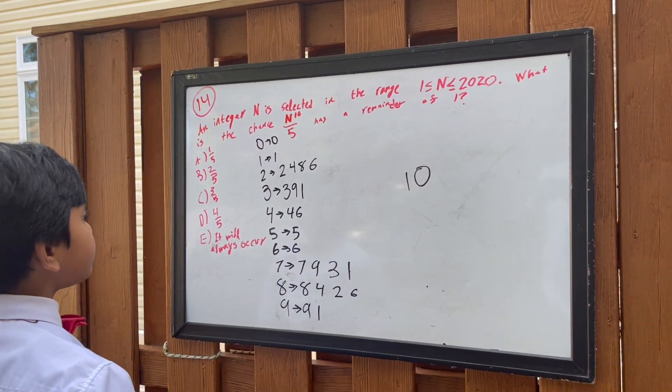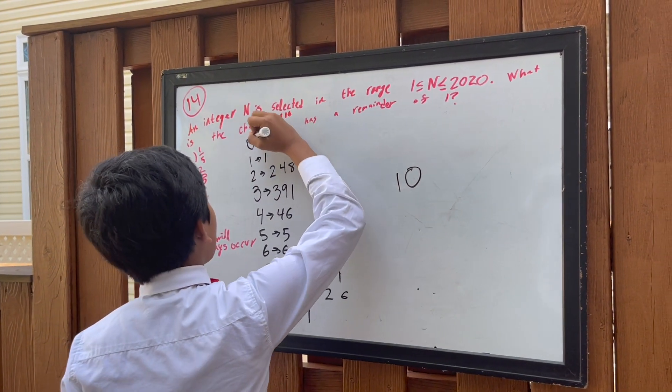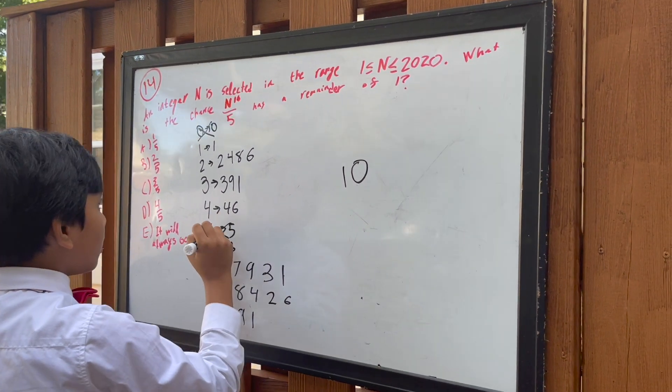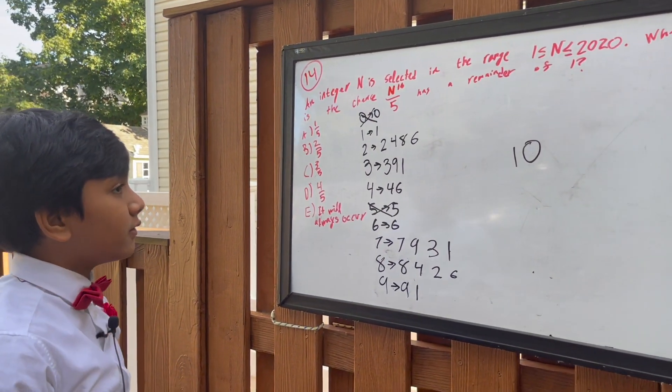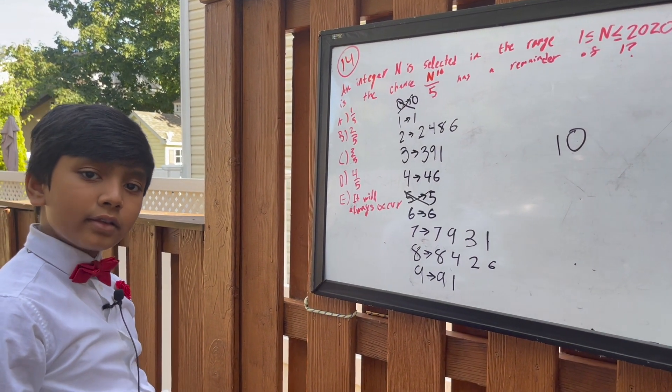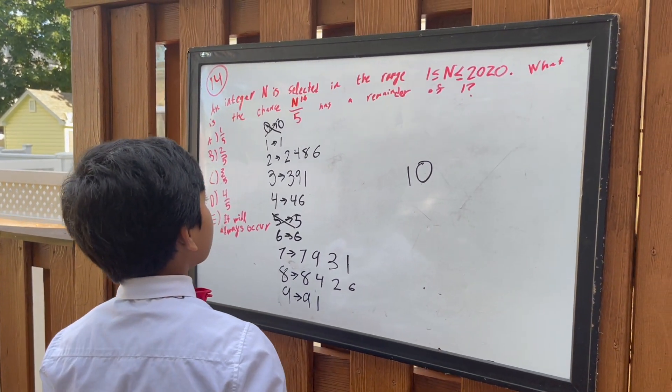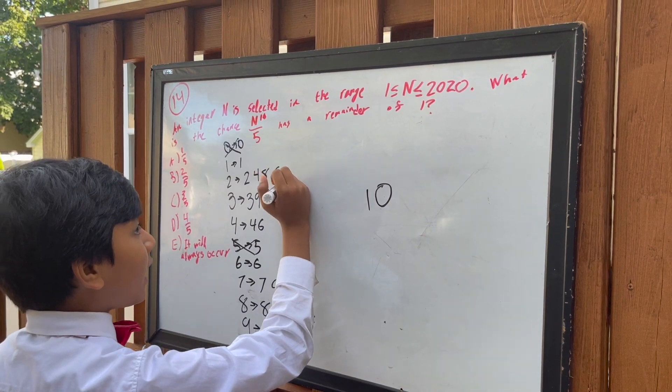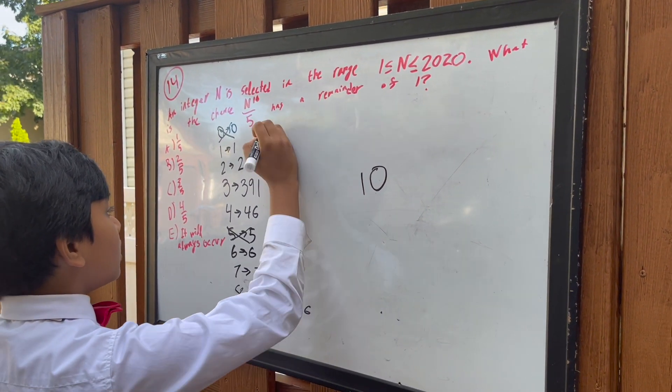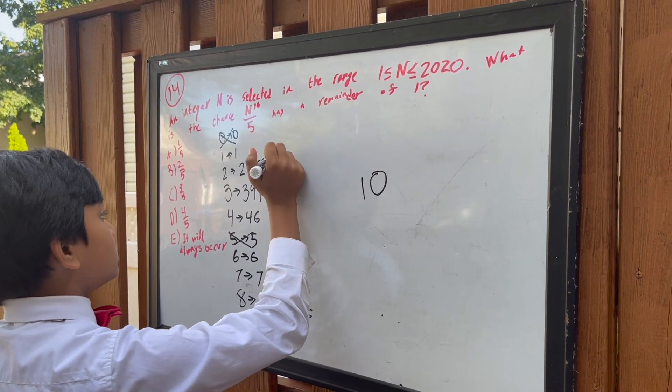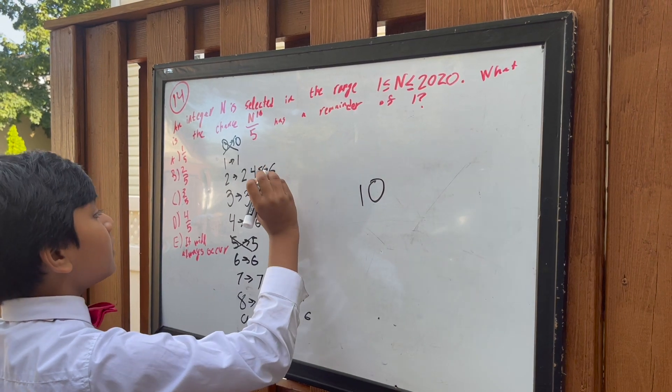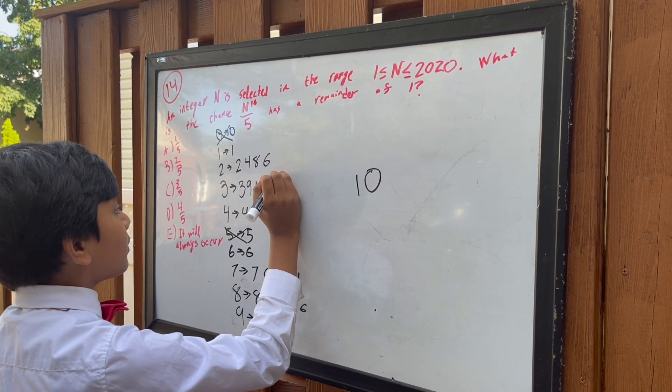So this one does not work, and this one does not work, because dividing either of them will give you a remainder of 0. So other than that, if you take everything here, if you divide anything by 5 over here, you'll get a remainder of 1.